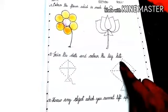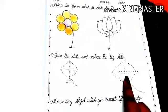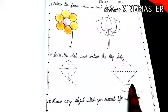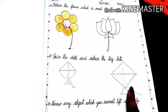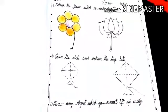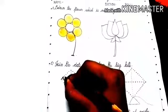Okay number two. Join the dots and color the big kite. Okay at first we have to join these dots. Okay these two kites you can see here so we have to join the dots at first. Let's start.